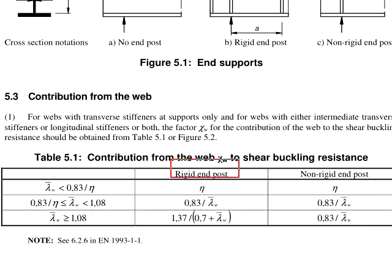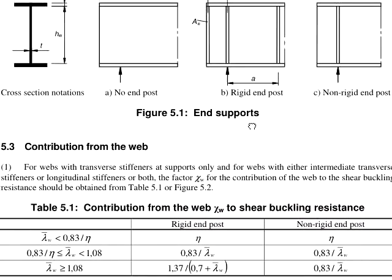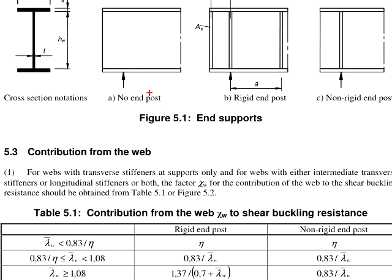There are two terminologies here: the rigid end post and the non-rigid end post. It is referring to the end supports of the member. Where if you do not have any stiffener at the support reaction there, it is considered as no end post.